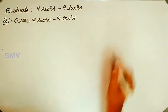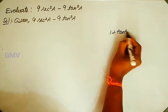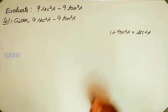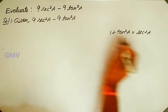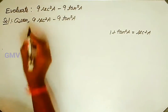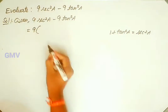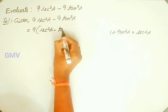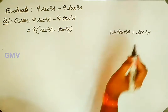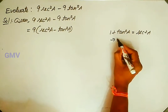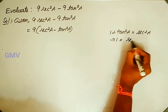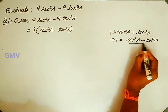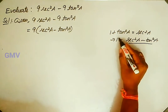We know that the second identity is 1 plus tan squared a equals secant squared a. By using this identity we can easily solve this. We take 9 as common, so 9 into (secant squared a minus tan squared a). This can be written as 1 equals secant squared a minus tan squared a, so the value of secant squared a minus tan squared a is 1.